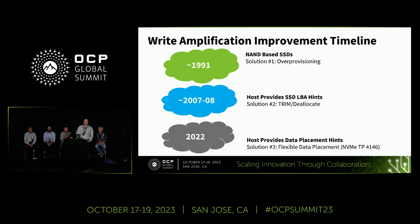How have we dealt with this over time? Back in the early 90s, the first big hammer was over-provisioning — 20% or even more potentially in some cases. That lets you reduce write amplification, but it's sort of diminishing returns. It's expensive to provision the extra NAND, and it doesn't solve the problem completely.